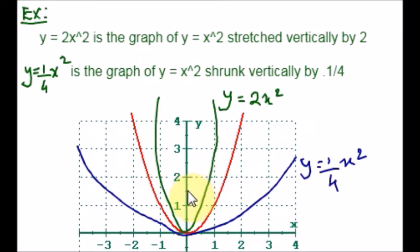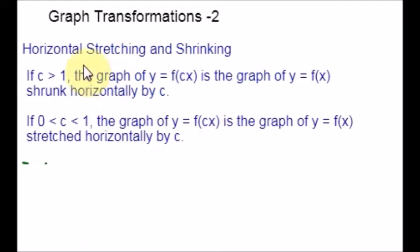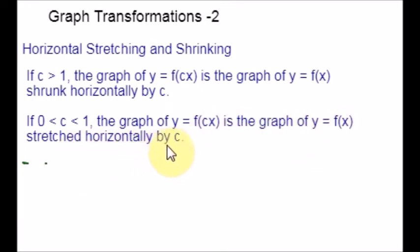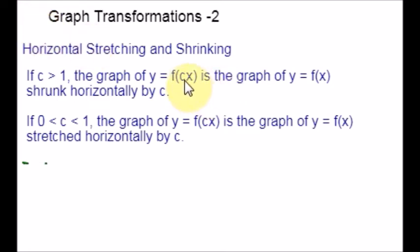Now let's discuss horizontal stretching and shrinking. If c is greater than 1, the graph of y equal to f(cx) is the graph of y equal to f(x) shrunk horizontally by c. If c lies between 0 and 1, then the graph of y equal to f(cx) is the graph of y equal to f(x) stretched horizontally by c. Please notice the difference: in vertical scaling, you multiply the number before the function, but in horizontal scaling, you multiply the number with x within the function.